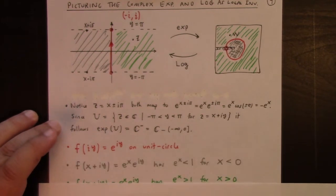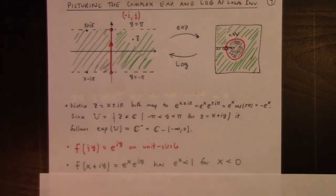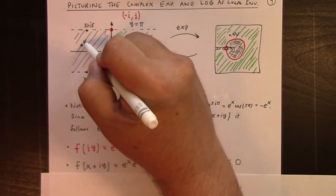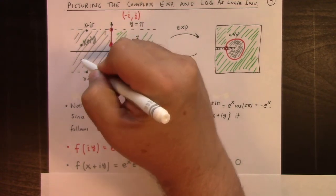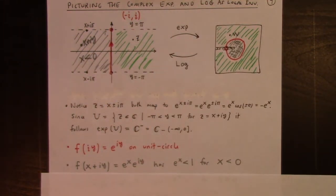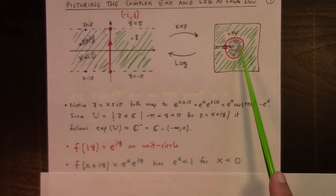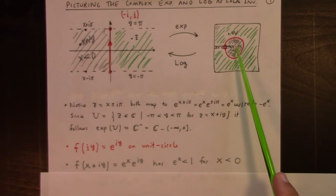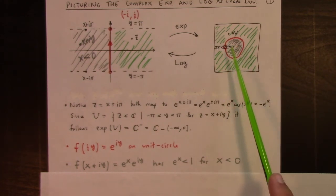On the other hand, if we look at x less than 0, if we look at x plus i y, x less than 0, like a point in here, then any such point is going to map to e to the x times e to the i y, which is a point in the interior of the unit circle over here. Of course, not hitting that deleted strip.